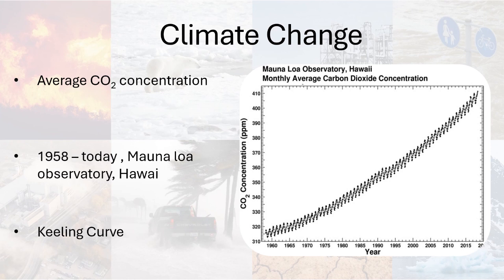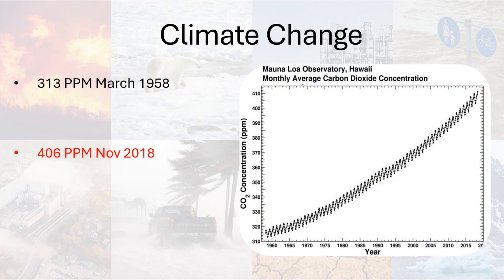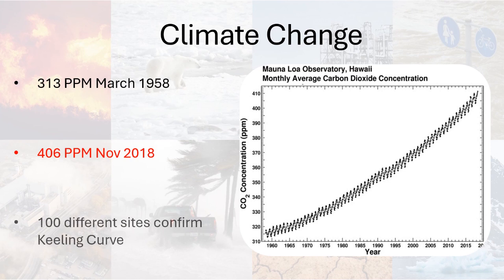It shows that CO2 in the atmosphere has been increasing sharply since then. A steady increase is seen from 313 parts per million by volume of CO2 in March 1958 to 406 parts per million in November 2018. The proxy technique used to find the CO2 concentration trapped in polar ice cores shows that in 1958, the mean concentration of CO2 was around 275 to 285 ppm only. There are about 100 sites collecting CO2 data now, confirming the Keeling Curve.